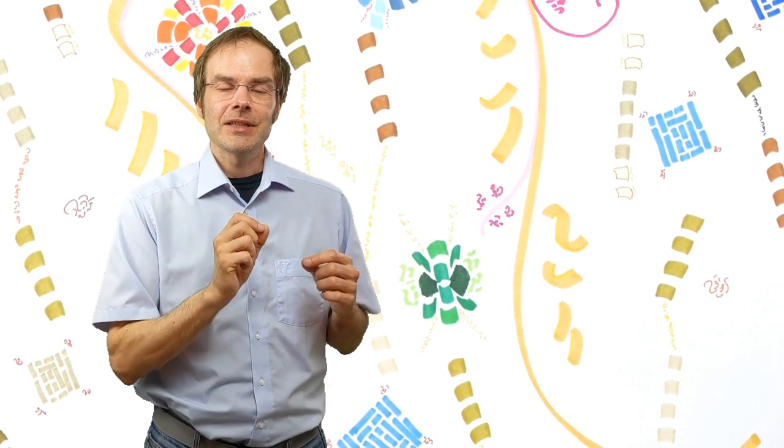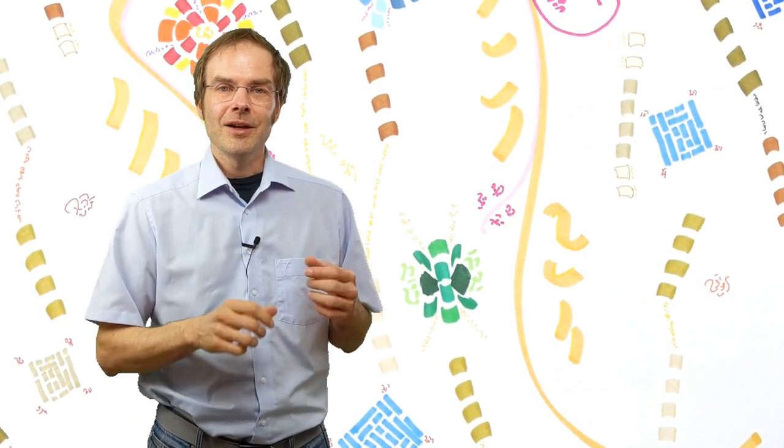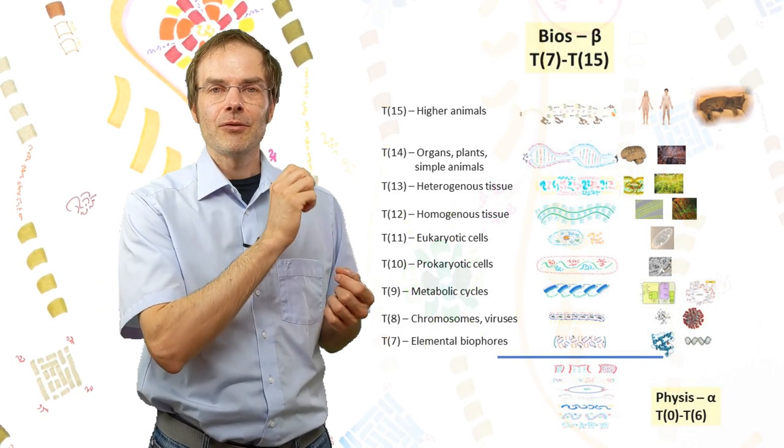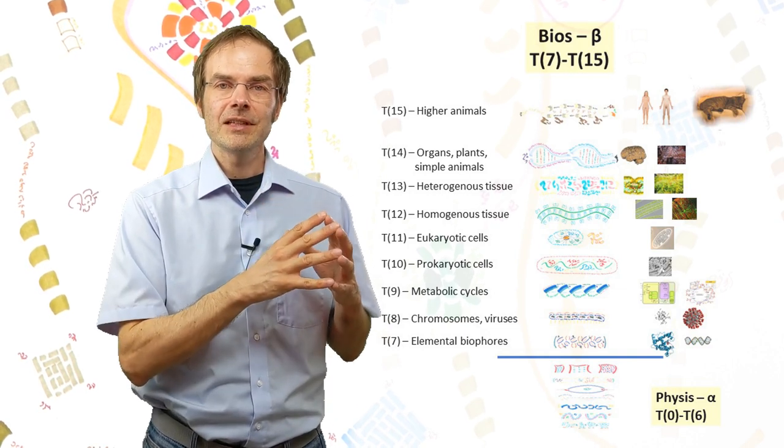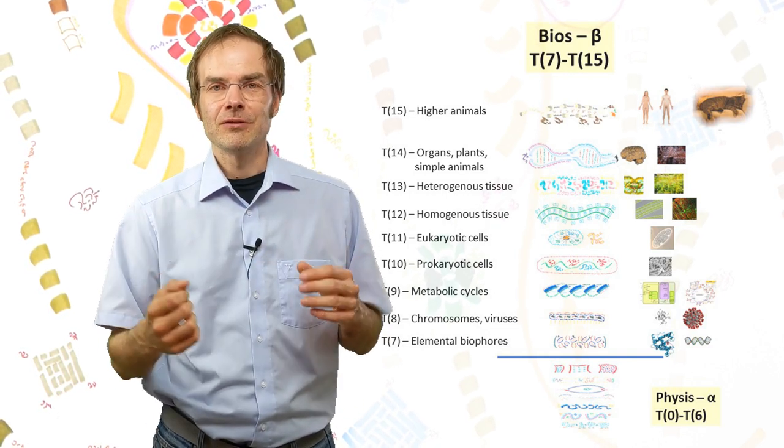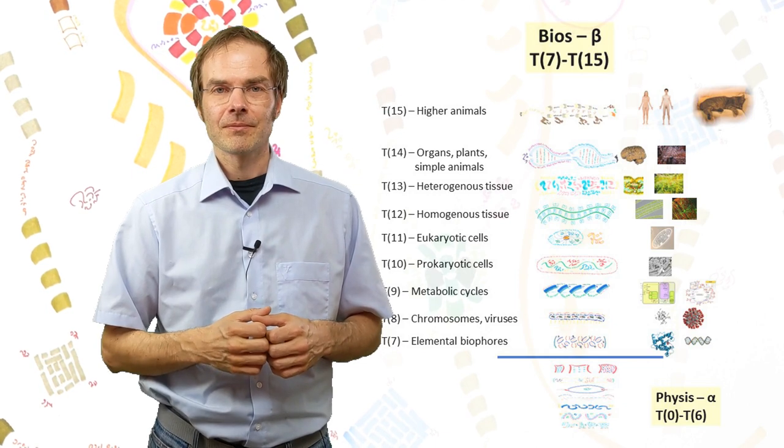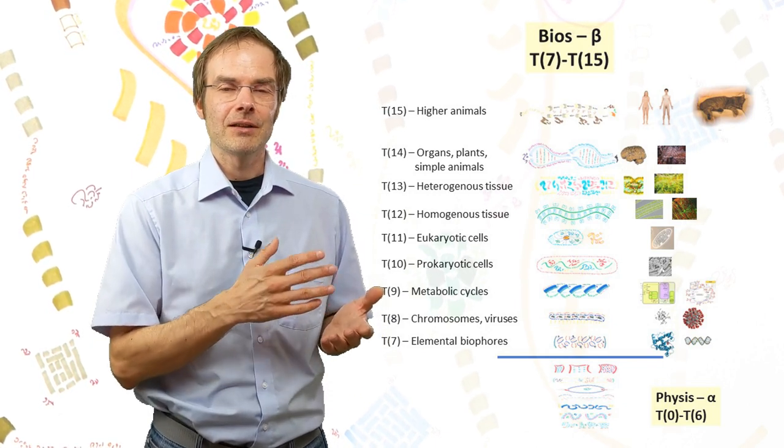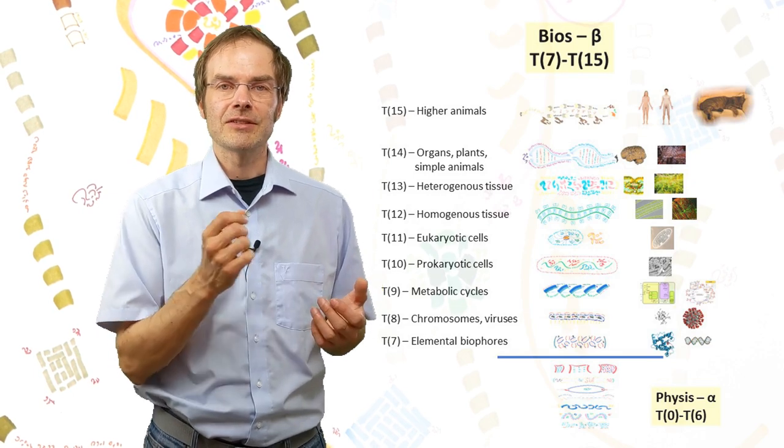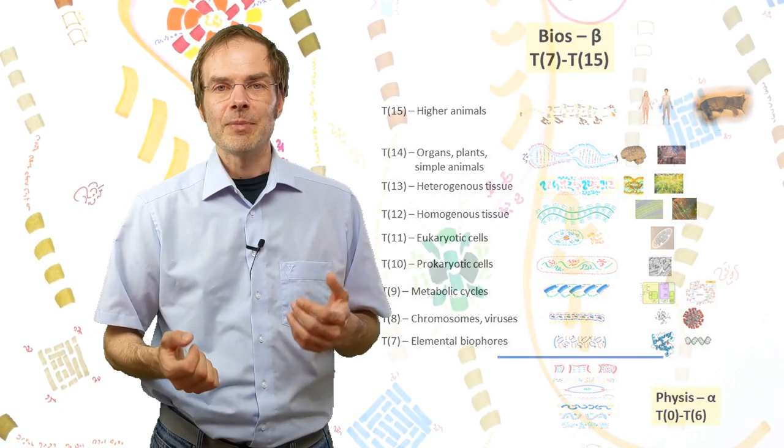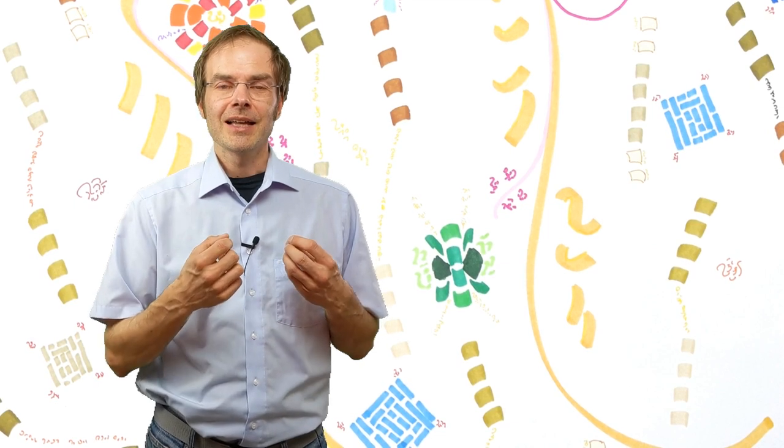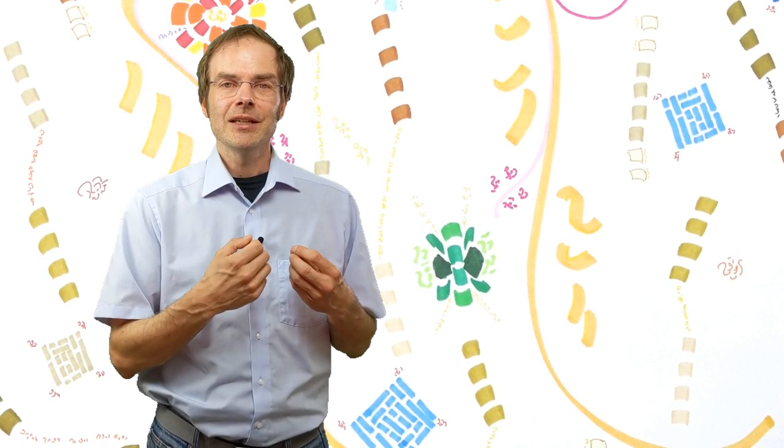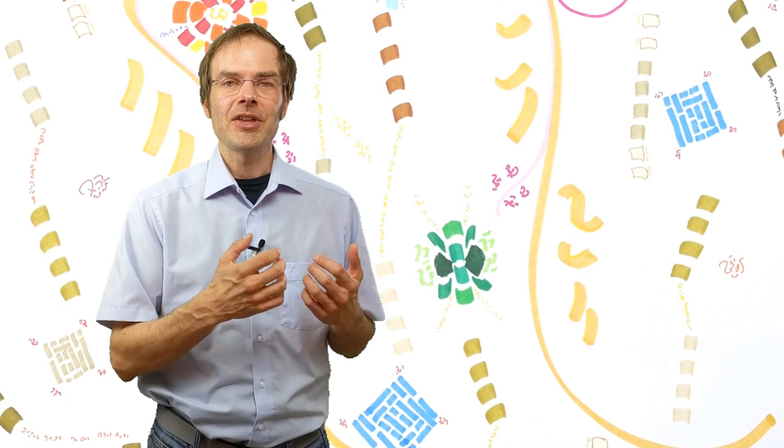It certainly cannot be located on these entelecual levels 7 through 15 because they only describe the physical arrangement of the matter involved. And most certainly it is not on levels 0 through 6 because they only describe the inanimate matter. Therefore, stimulus registration and processing can obviously not be material structures after all. There must be something else.